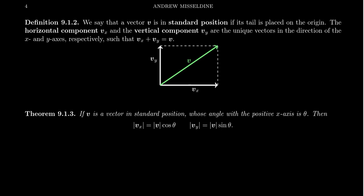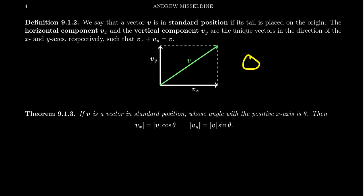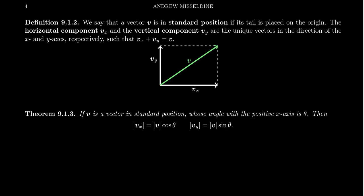Notice that when you look at this vector, it's sort of like if you have the sun shining over here, then vx is just the shadow of v cast onto the x-axis. In the other direction, if you think of vy, we're going to place the sun over here, and it casts a shadow v onto the y-axis. That's exactly what vy is — it's the shadow cast onto the x-axis or the y-axis by the vector v.